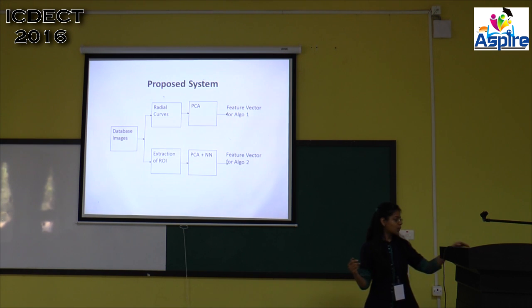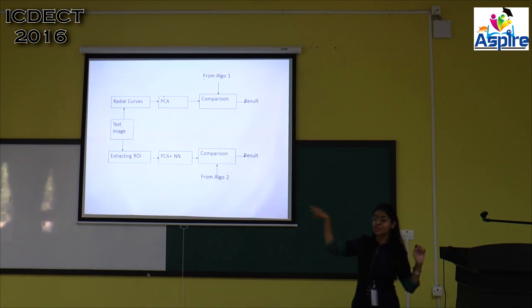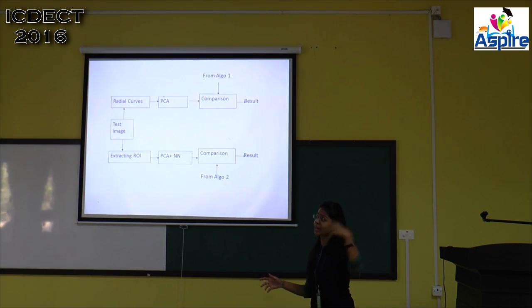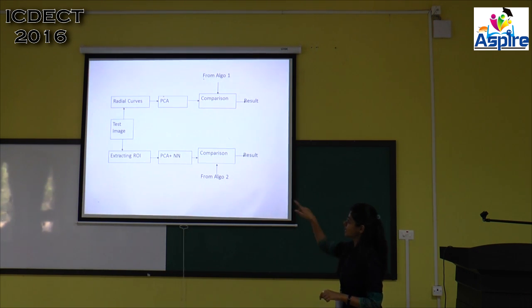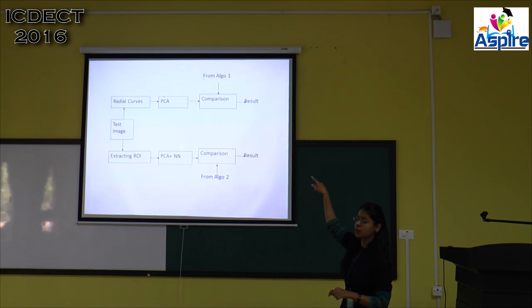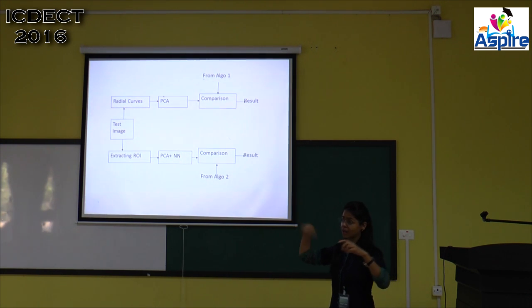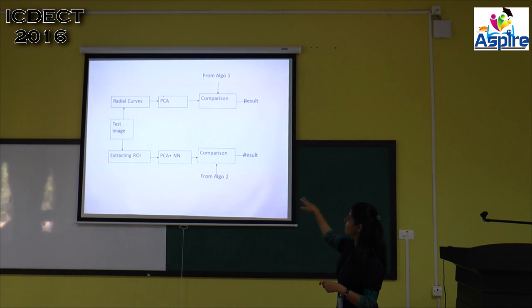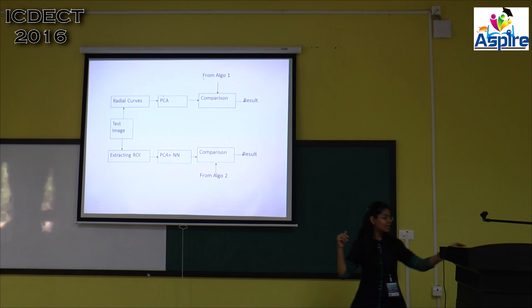That was the training phase; now I am going towards the testing phase. The same procedure is applied — whatever I was doing for 400 images, we now get the stored information. For the testing image, radial curves and PCA are applied, and then the comparison is done between the results achieved from Algorithm 1 in the previous stage and the current testing image results. The same is done for Algorithm 2, and then I compare both results.